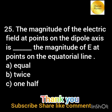The magnitude of the electric field at points on the dipole axis is dash the magnitude of the electric field E at points on the equatorial line: option a) equal; option b) twice; option c) one half.